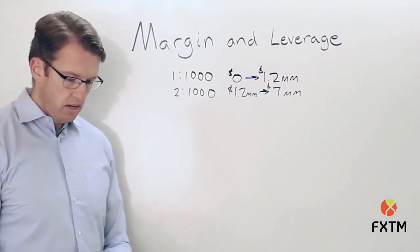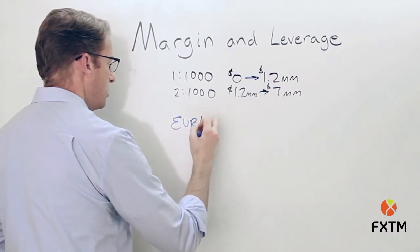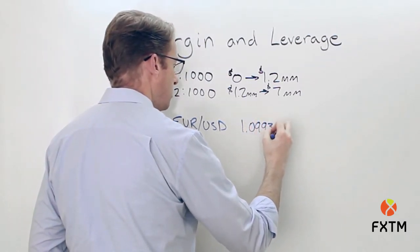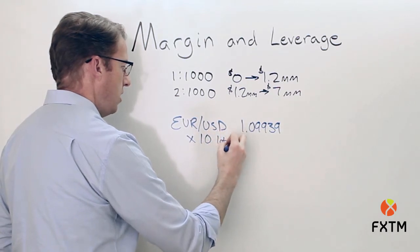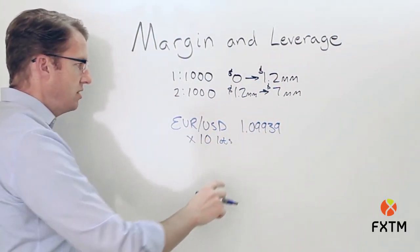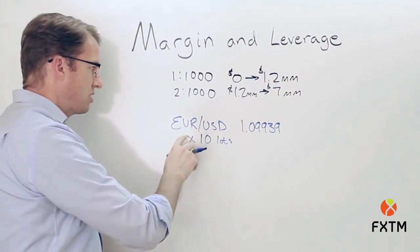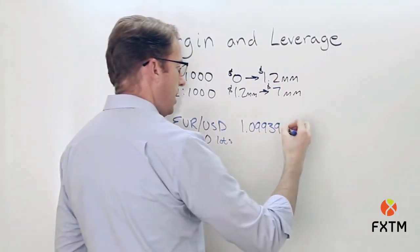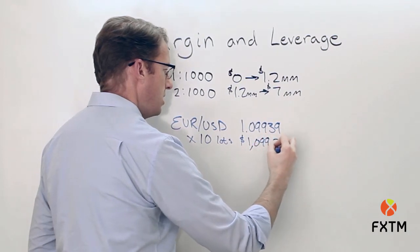Let's say a trader is holding open a larger position. We'll use the euro to the US dollar again with the same exchange rate of 1.09939, and here we'll assume they're holding open a position of 10 lots. We know that 10 lots represents 1 million units of the euro. Multiplying that by the exchange rate gives us a notional value of $1,099,390.